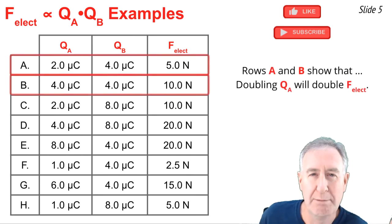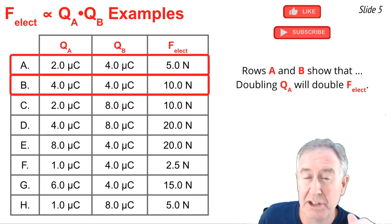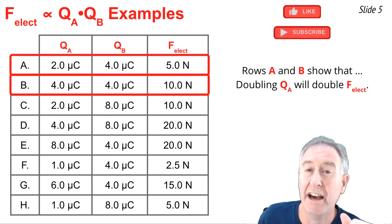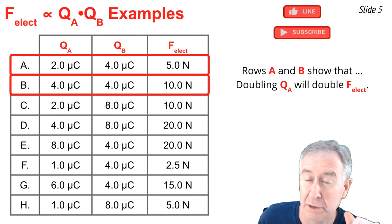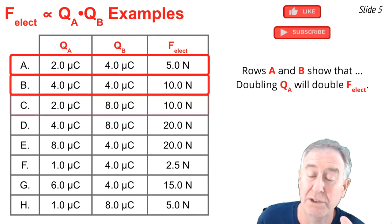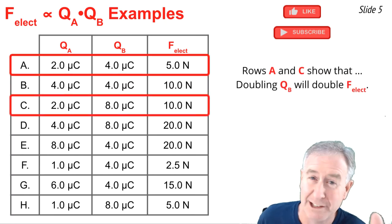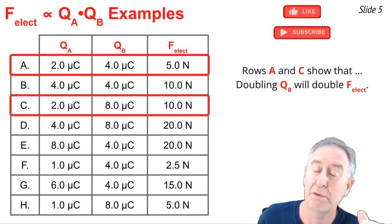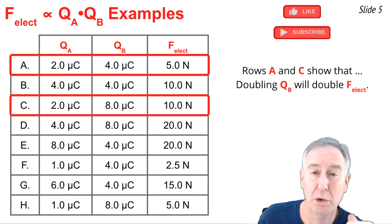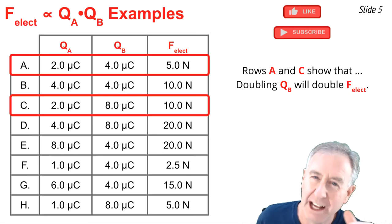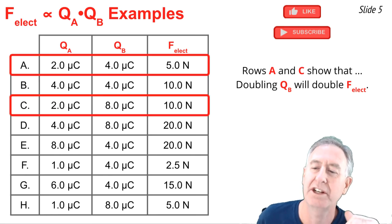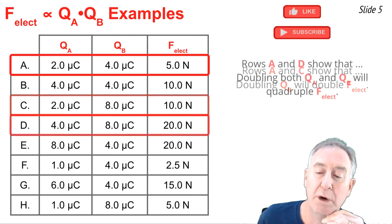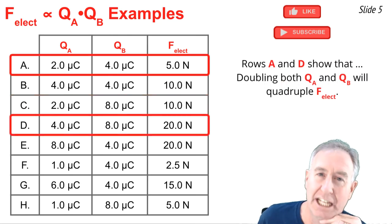If we look at rows A and B, we'll notice that a doubling of the QA value will cause the F electrical value to double as well, from 5 newtons to 10 newtons. Rows A and C show that if you double the QB value from 4 microcoulombs to 8 microcoulombs, that also causes the electric force to double from 5 newtons to 10 newtons.